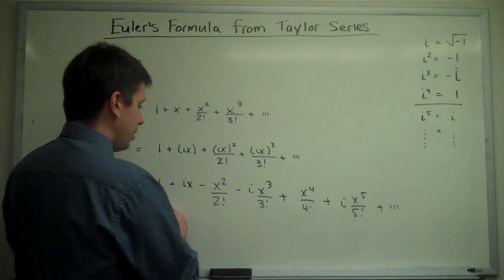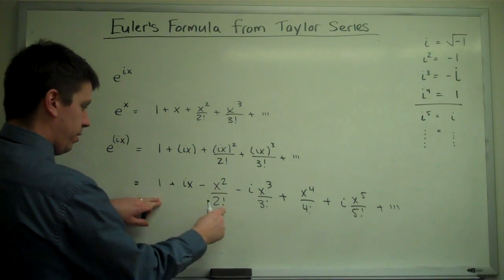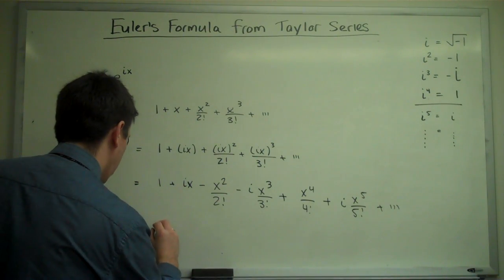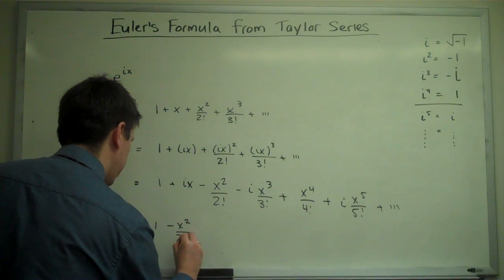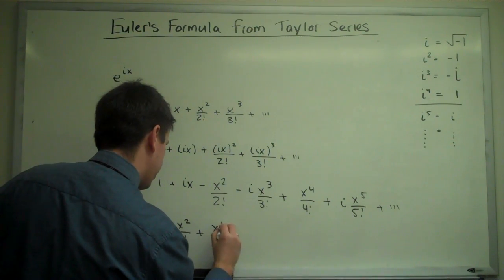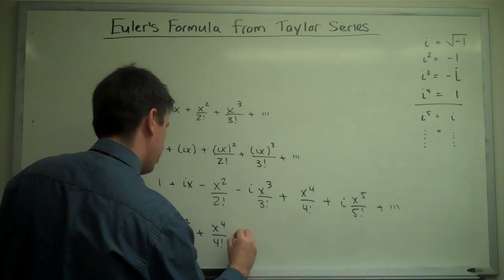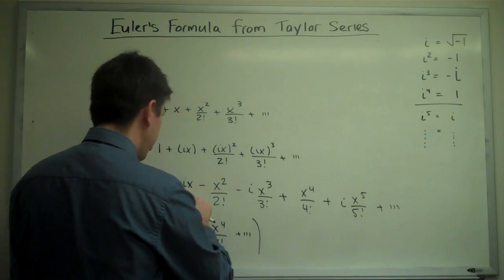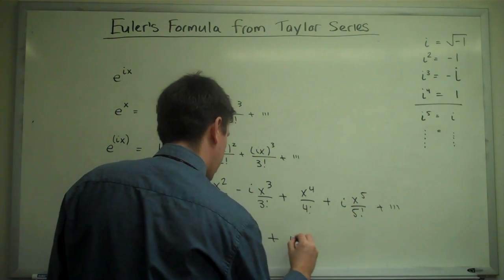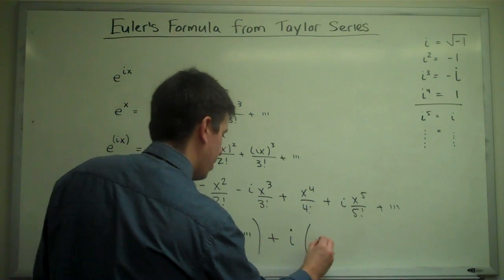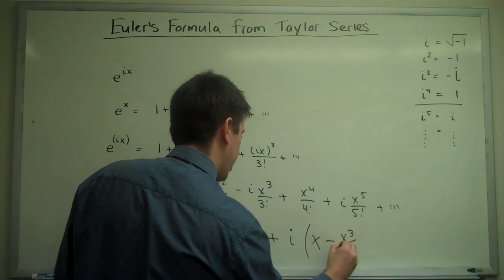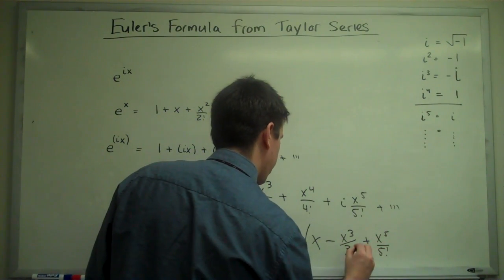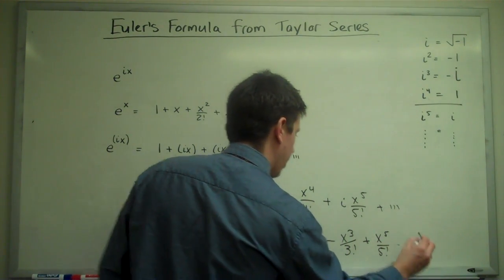Now, what we can do is collect all the real terms, this one, this one, that one, and so on, and put them all together: 1 minus x squared over 2 factorial plus x to the fourth over 4 factorial and so on. And then let's collect all the imaginary terms and factor out the i. So they all have a common factor i: x minus x cubed over 3 factorial plus x to the fifth over 5 factorial and so on.